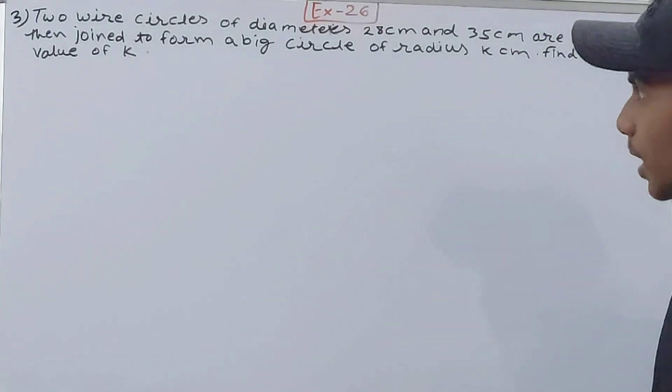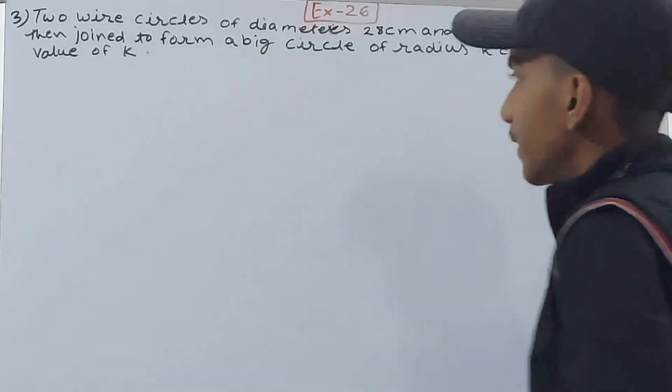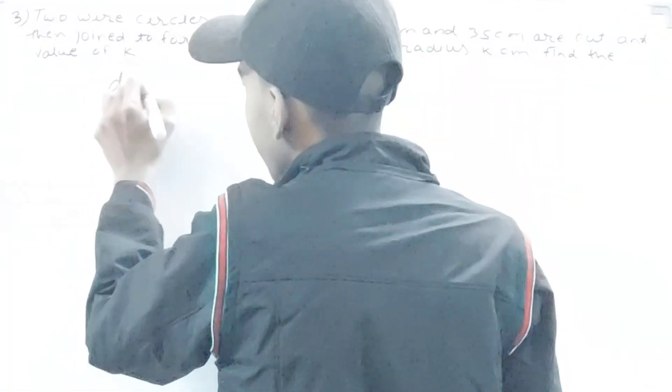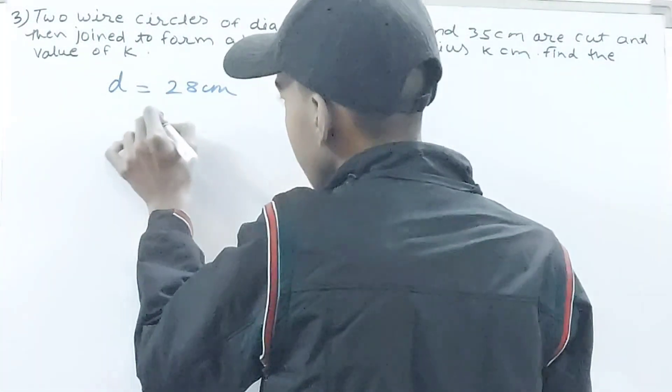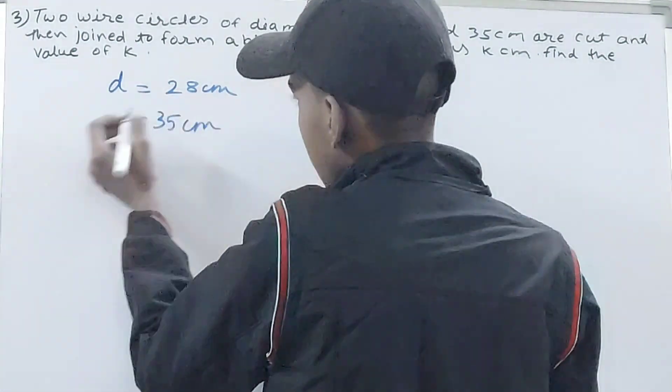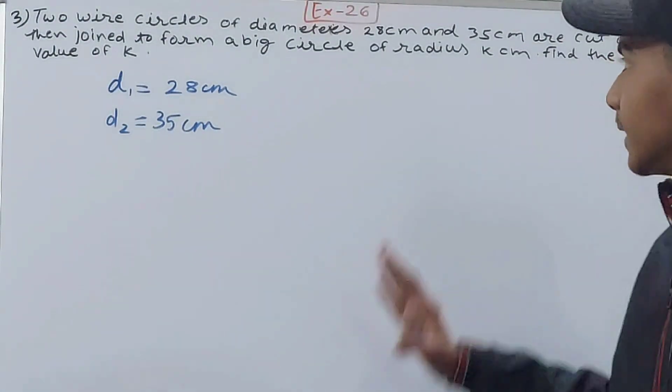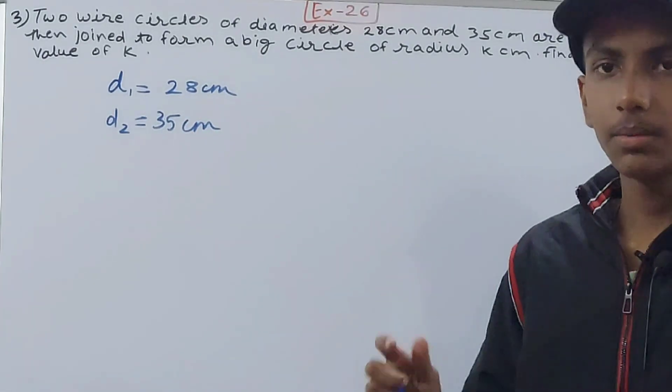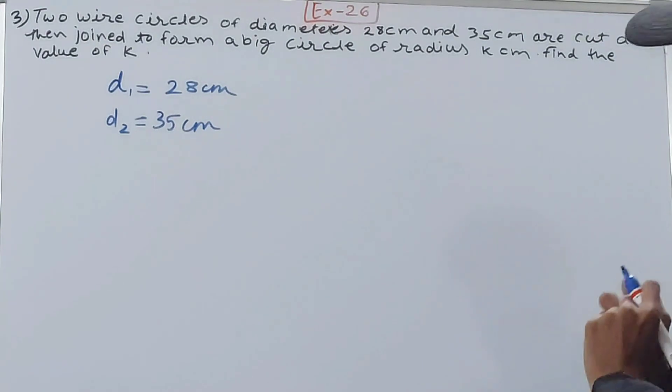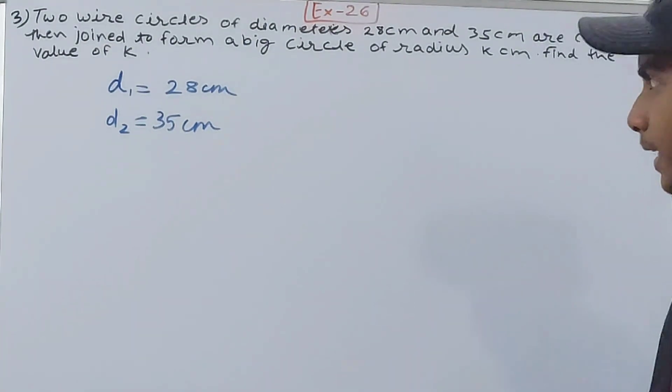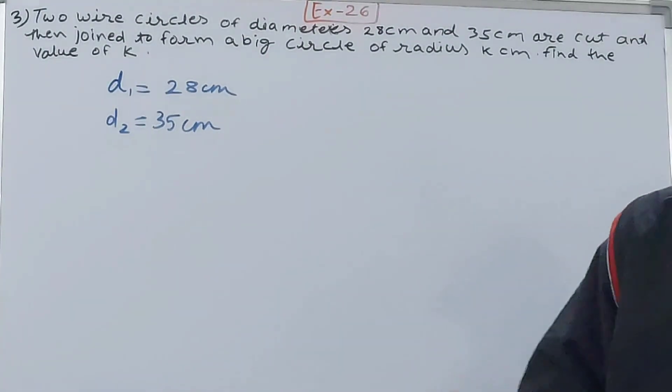So here basically it's saying that two wire circles of diameters 28 centimeters and 35 centimeters - so I have got two diameters, one is 28 centimeters, another diameter is 35 centimeters, let's say d₁ and d₂. Here you can see it's saying that these two wire circles have been joined with the wire, they are being cut, and then they are joined to form a bigger circle.